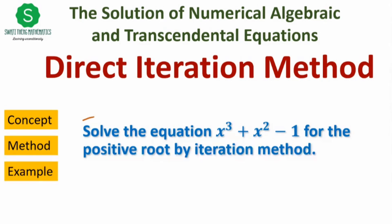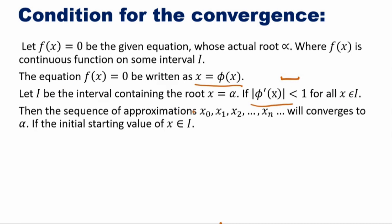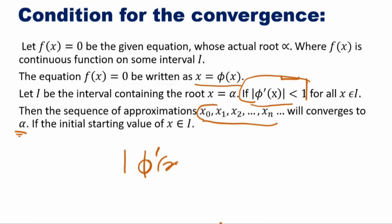To solve this example, we recall from the previous lecture the steps of the direct iteration method and one theorem — the condition for convergence. If we have the equation f(x) = 0 with root alpha in an interval, we rewrite the function in the form x = phi(x), then check whether |phi'(x)| < 1 for all x in the interval. If this holds, then the sequence of approximate roots x0, x1, and so on converges to alpha.